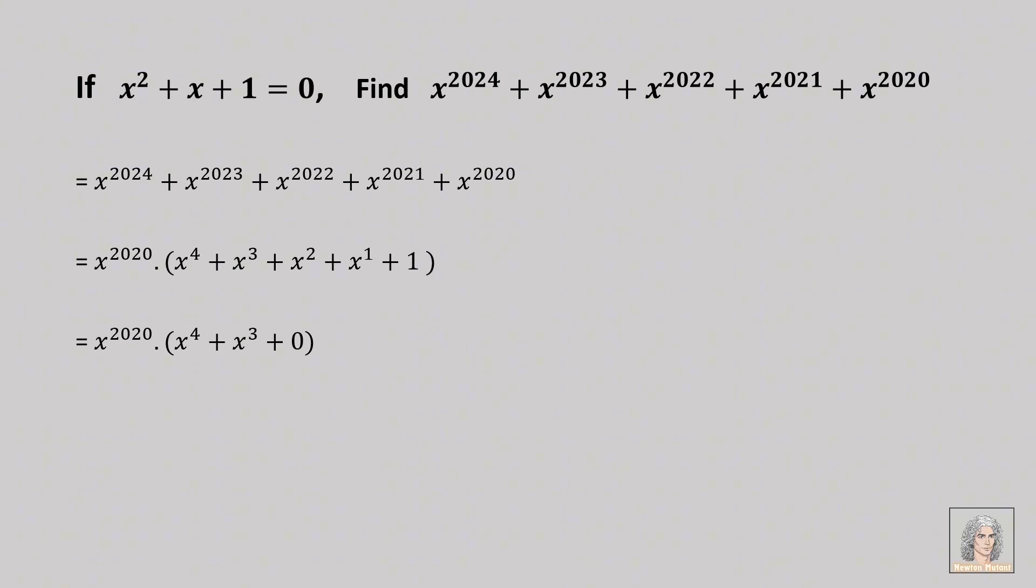Then, this remaining part which has x to the power 4 and x to the power 3 also can be factorized. Let's take out x to the power 3 from it. We get x plus 1 inside brackets.